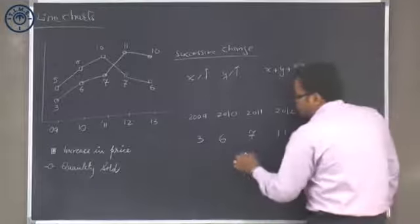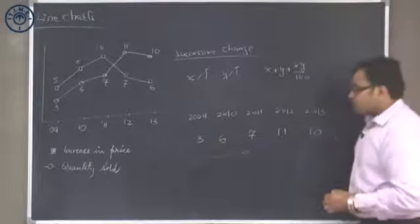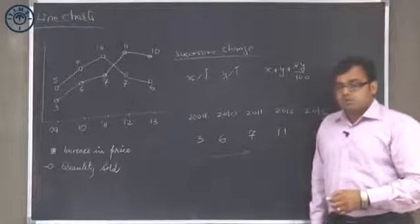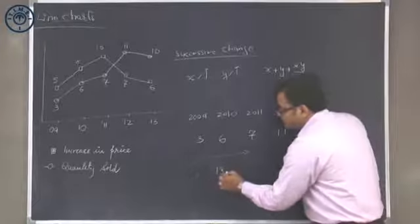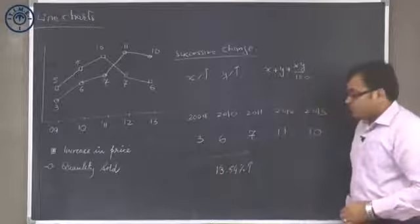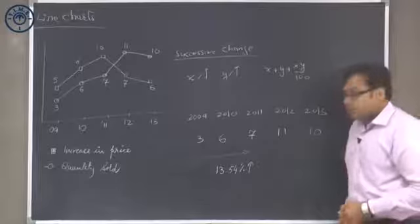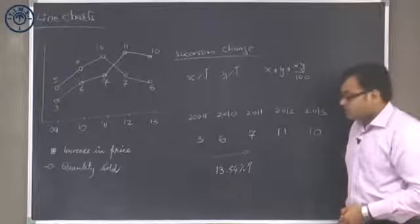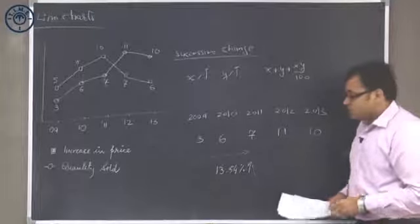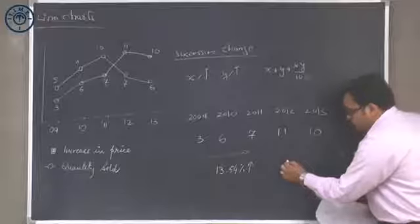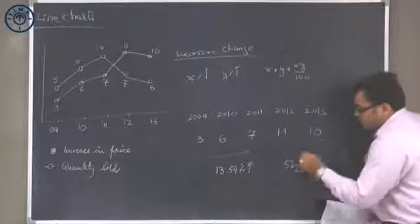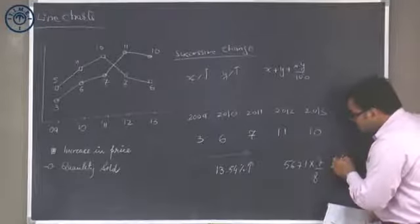From 2009 to 2011, the increases of 6 and 7 percent, this will become 6 plus 7, 13 plus 0.42, so this will become 13.54 percent increase. If it is 13.54 increase, that means this is approximately 14.28 which is equal to 1 upon 7, so this is approximately 8 upon 7 times. If it is 8 upon 7, the initial value will be 7 by 8 times, so this becomes 5671 multiplied by 7 by 8.